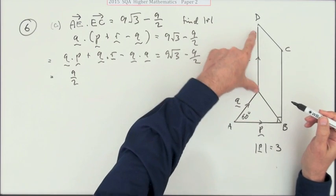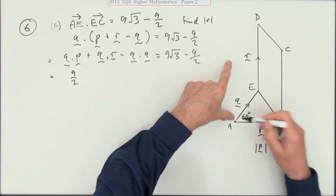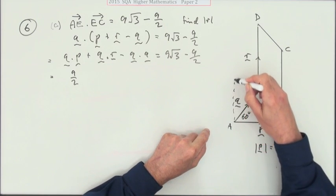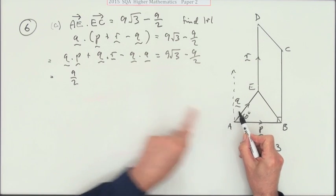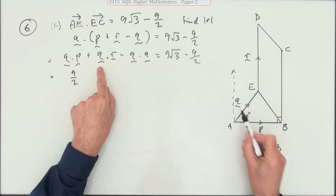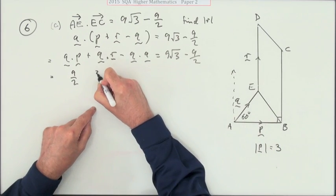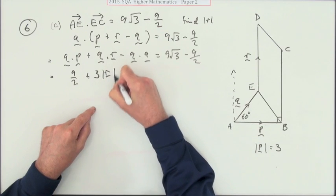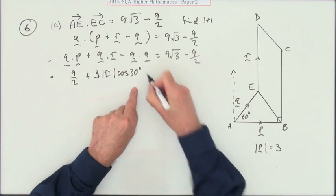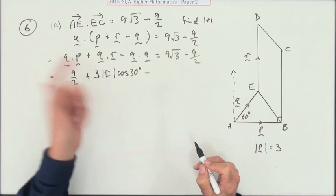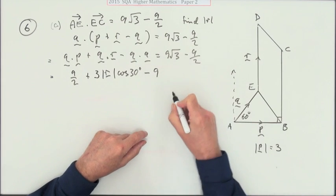So if this is r here, I'll have to make it start from where q starts. So obviously the angle between them is 30. So q dot r will be: now the length of q is 3, I don't know the length of r, but I know the angle between them is 30. And obviously q dot q is just things times itself, so that's minus 9.